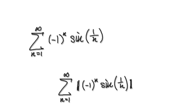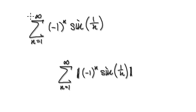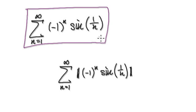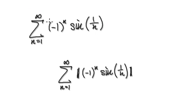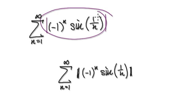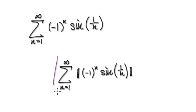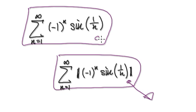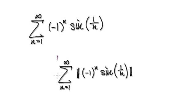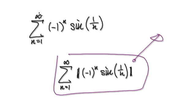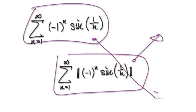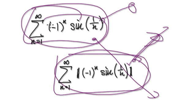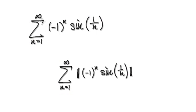Let's look at another example of absolute convergence tests. There's a theorem that says if you're trying to determine whether a series will converge or diverge, you should look at the absolute version of it. If the absolute series converges, then the original series will also converge. However, if the absolute version diverges, it doesn't tell us anything about the original — it could still converge or diverge. Let's put this theorem to use.